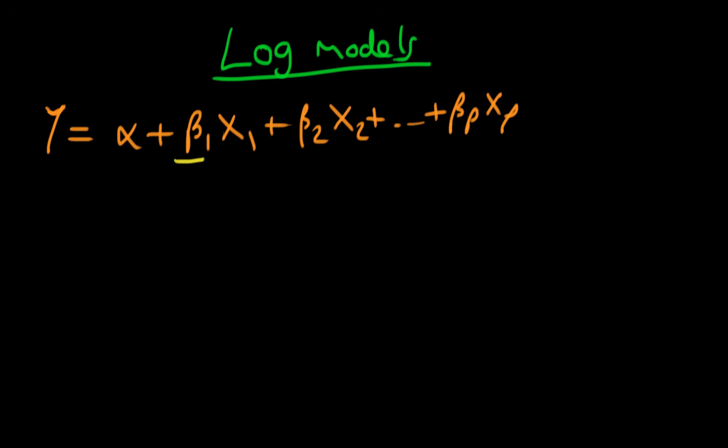That was the case where we had a wholly linear model. What happens if instead I regress log y on the logs of my independent variables, so I have beta 1 times log of x1 plus beta 2 times log of x2, continuing all the way up to beta p times log of xp?